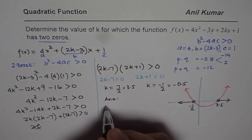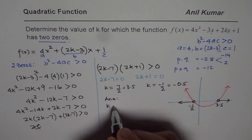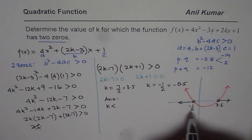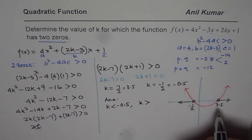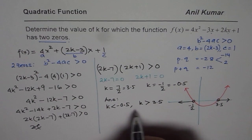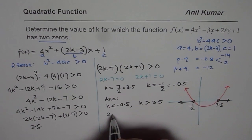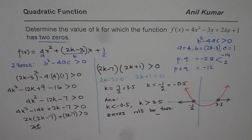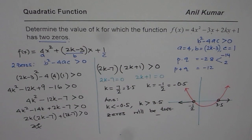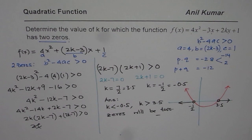Therefore, we can write down our answer: k should be less than minus 0.5, or k is greater than 3.5. For these values, we have 2 zeros. That is how we solve this question — it's a very important question from a test point of view. I'd like you to go through this video once again, understand the concepts, and then try another related question on the same basis. I hope that helps. Thank you and all the best.